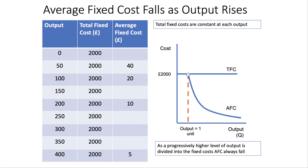Another key diagram to think about in terms of cost is the average fixed cost curve. Average fixed cost will always fall because the total fixed costs of production are constant — they don't vary with output. Therefore, the higher the output, the lower will be the fixed cost per unit. For example, if fixed cost is £2,000, average fixed cost is £2,000 at output of one, but halves if output is two. The average fixed cost curve always falls asymptotically.